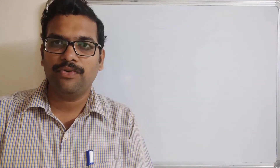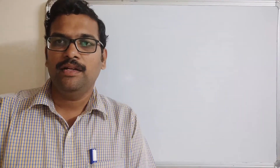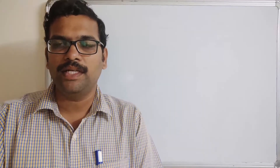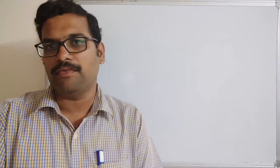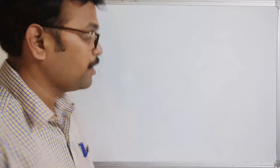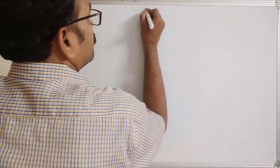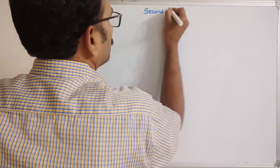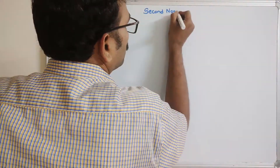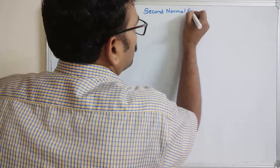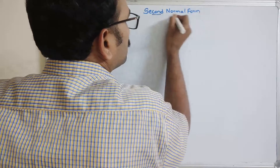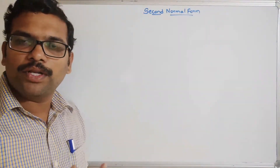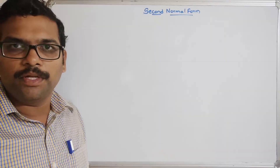Hello friends, welcome back to our channel. In today's session, we'll discuss one more normal form, that is 2NF — second normal form. This is one more level of normalization in order to avoid redundancies and overcome the anomalies.